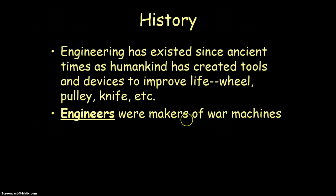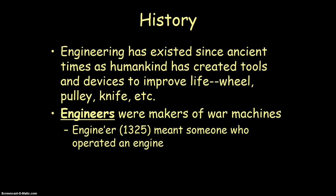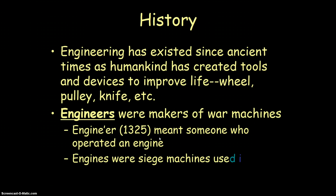Engineers, as we know them today, were originally makers of war machines. The word engineer comes from someone who operated an engine — they called them an engineer. That started at the end of the Dark Ages. People were operating machines meant to lay siege to another group of people. Engines were siege machines used in the act of war, and that's where the word engineer comes from.